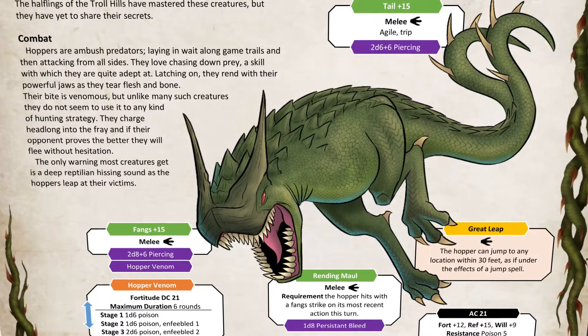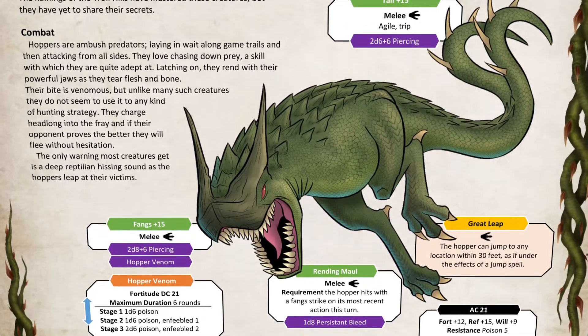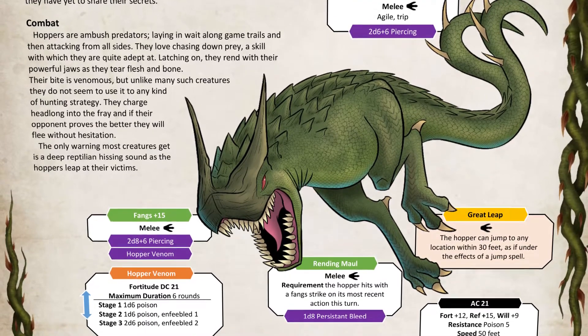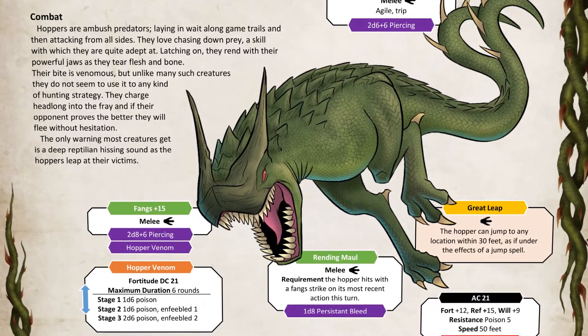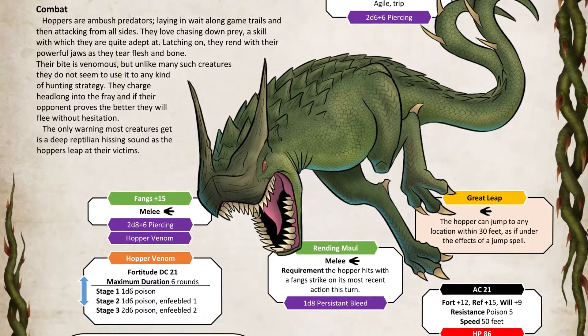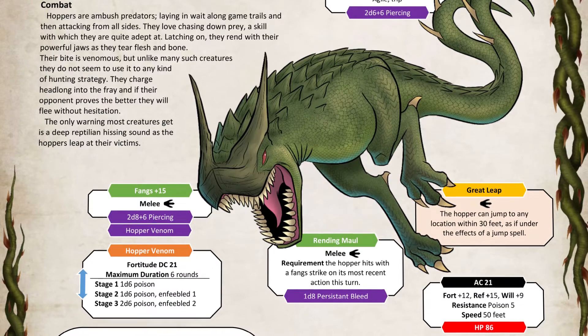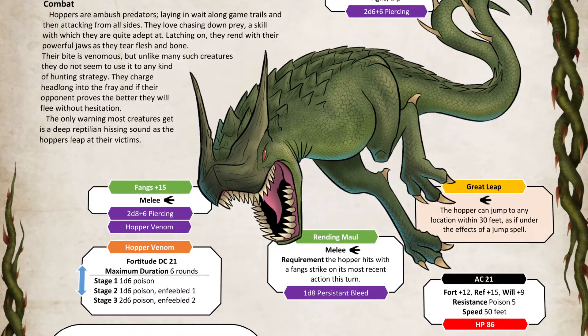As you can clearly see, around each part of the creature you see the various types of attacks that it has. At its tail you see: tail, plus 15 to hit, melee, one action, agile trip, 2d6 plus 6 piercing damage. Most of these things are self-explanatory — they're just laid out in a different format than what you might see from Paizo. Paizo is very linear and list-like. For Beast Foundry, I really wanted to do something more organic and fun to look at that helps draw your eye to what you want.